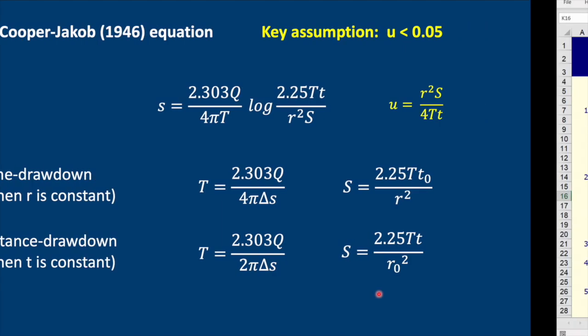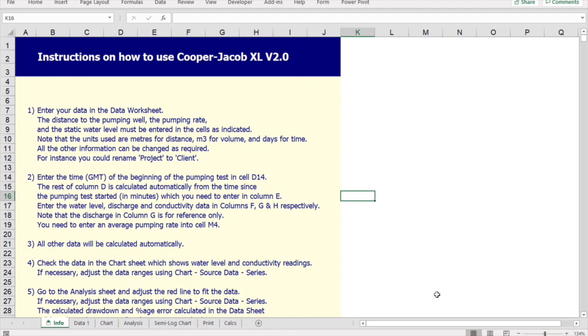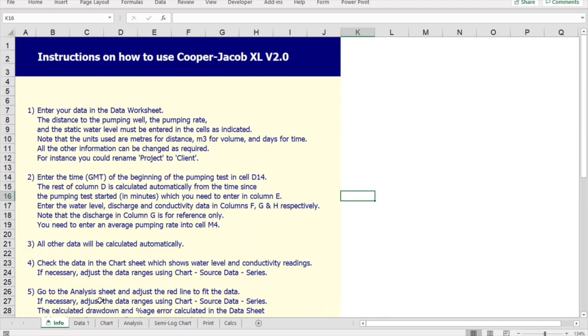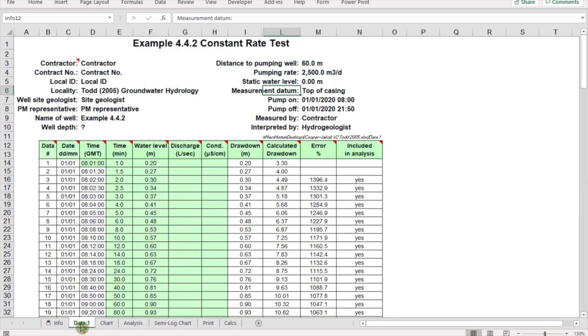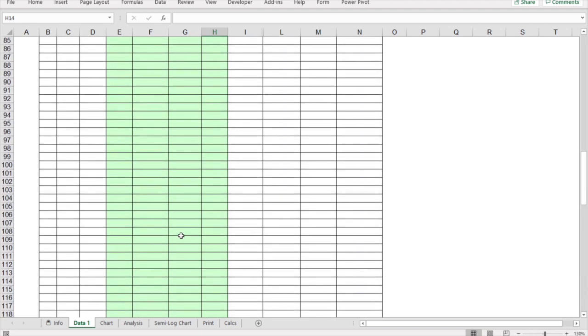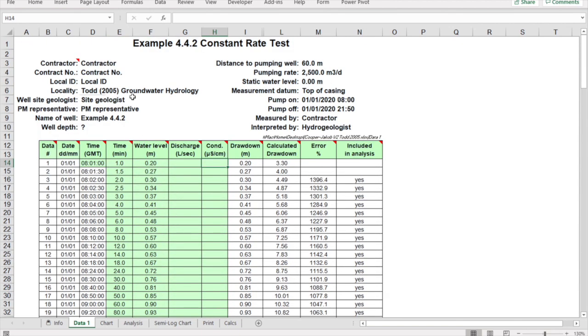Let's have a look at the Excel spreadsheet called Cooper-Jacob Excel which I developed in Ghana back in 2003. In the info data sheet there are a whole bunch of instructions telling you how the spreadsheet works. In data what you need to do is add all of your time and water level data, discharge data, and conductivity into these green cells here.